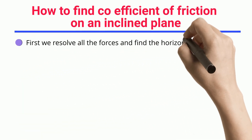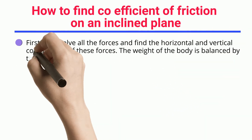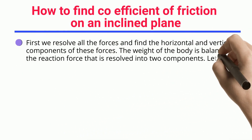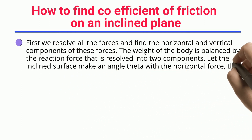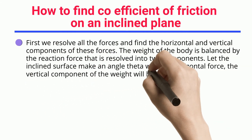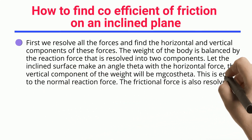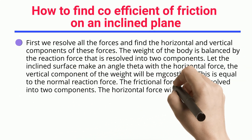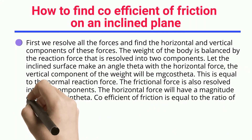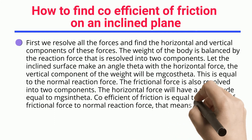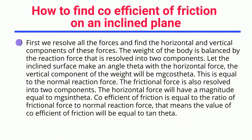First, we resolve all the forces and find the horizontal and vertical components. The weight of the body is balanced by the reaction force resolved into two components. Let the inclined surface make an angle theta with the horizontal. The vertical component of the weight will be cos theta, which is equal to the normal reaction force. The frictional force is also resolved into two components; the horizontal component has a magnitude equal to mg sin theta.